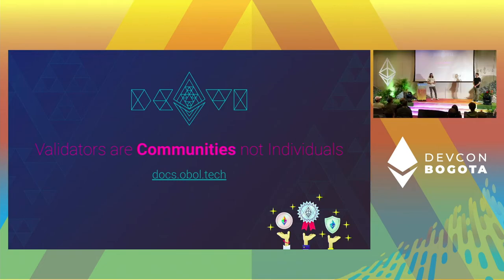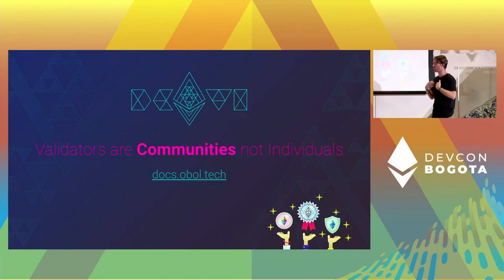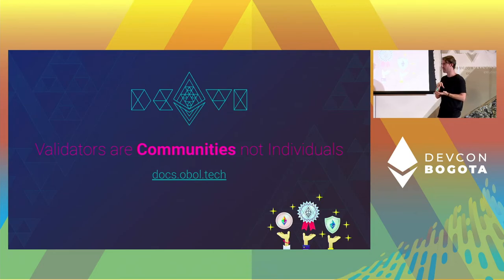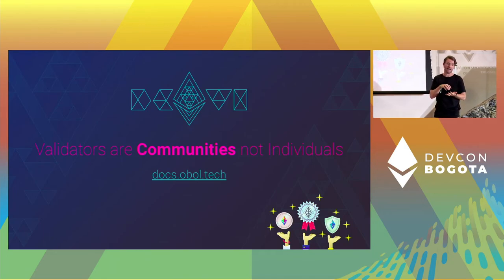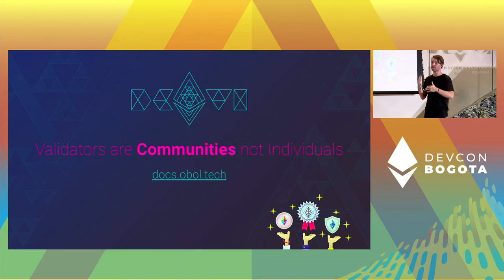To close it down, DVT since ETH Denver at the beginning of this year has really begun to have its turn of adoption. Our North Star as a project today is convincing everyone that validators are communities, not individuals. Today the network topography has validators as a single key, a single person, or a single entity. With this technology, we can migrate that paradigm into validators being run predominantly by communities. We have about five minutes left for questions, and since DVT has been a new topic introduced over the past few months, we want to make sure we take time to answer anyone's questions.